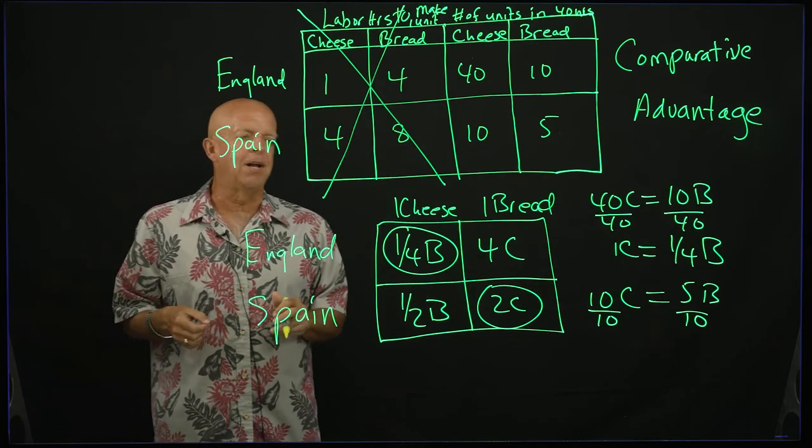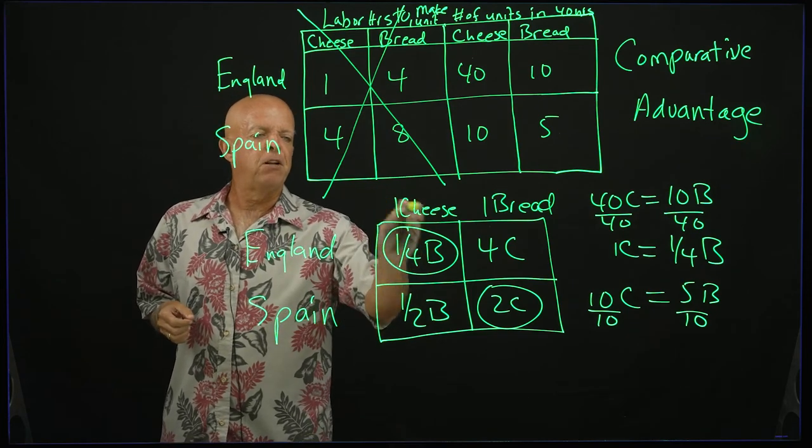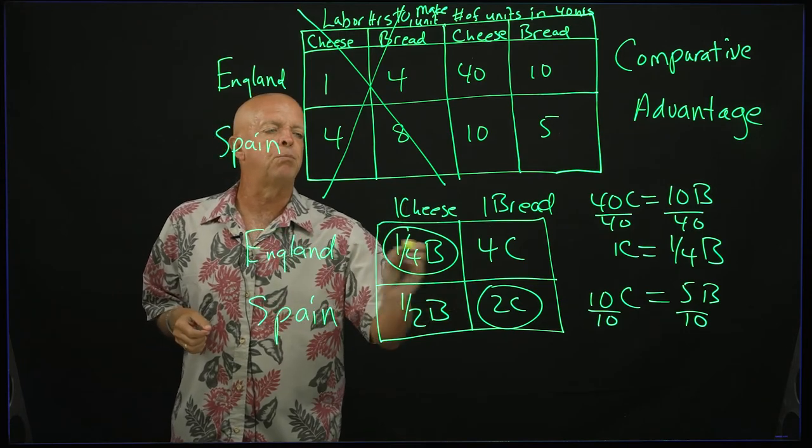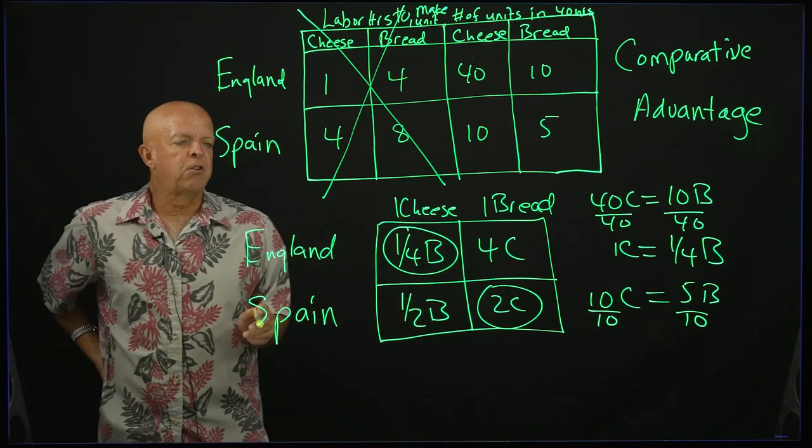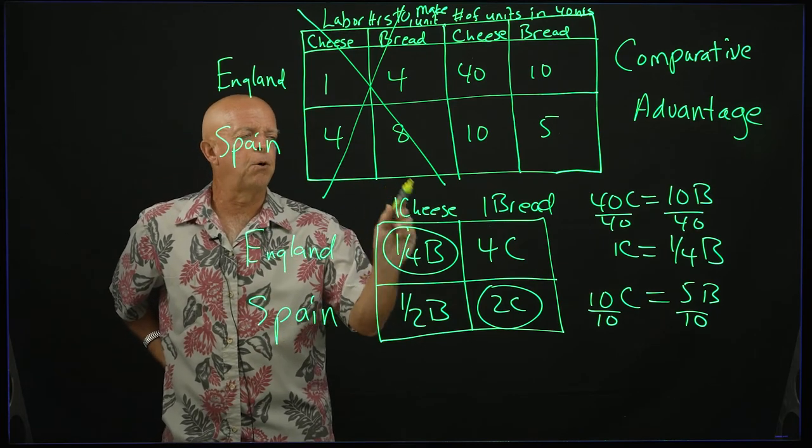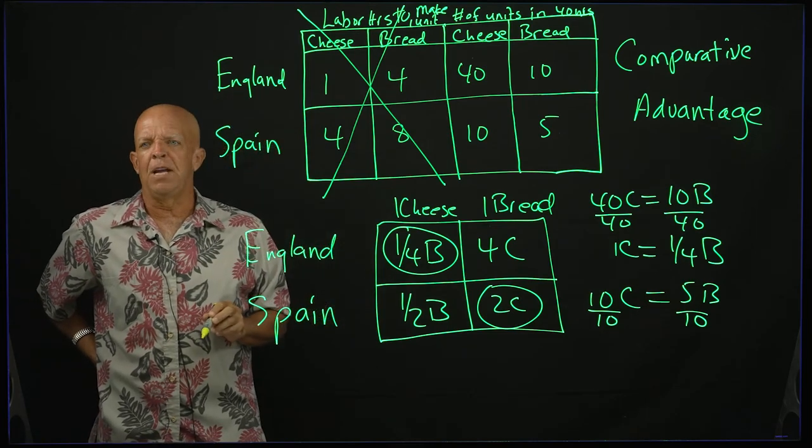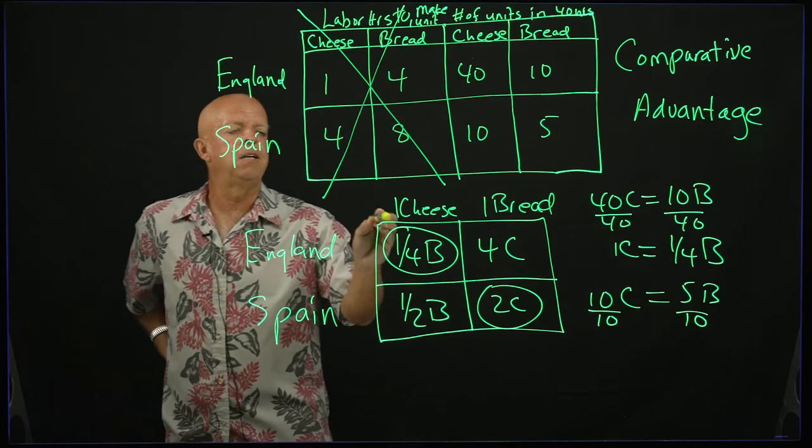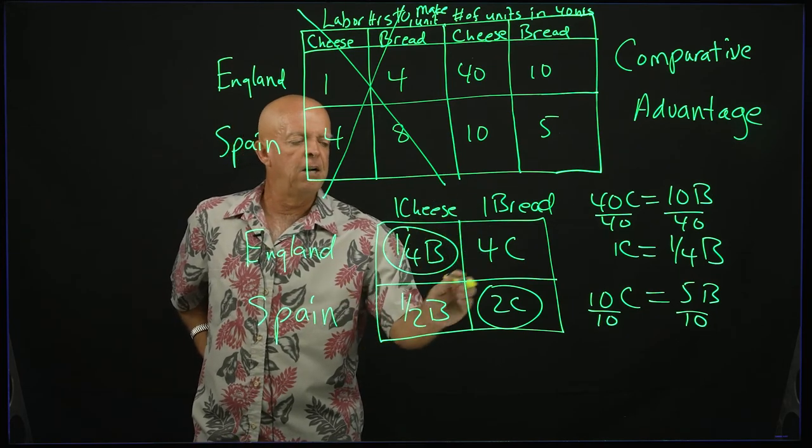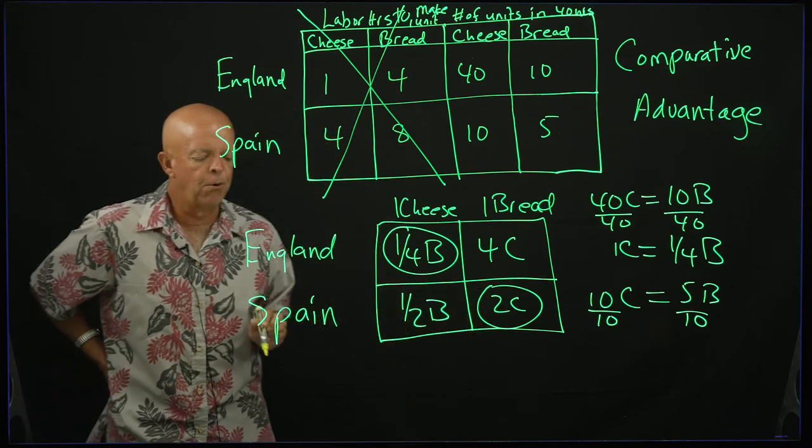So now we get to answer all of the questions. Who has the comparative advantage? Who should produce what? England should produce cheese and Spain should produce bread. Who should export cheese? England. Who should export bread? Spain. And if you export one good, you are importing the other good. So if England exports cheese, they will by definition import bread. And Spain, they export cheese, they import bread.